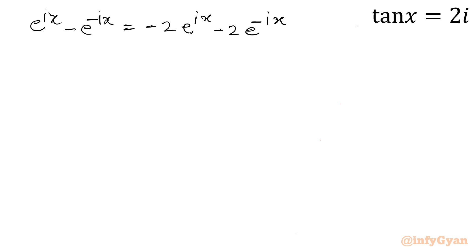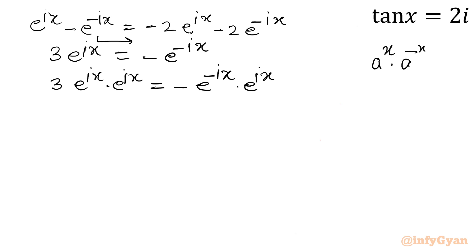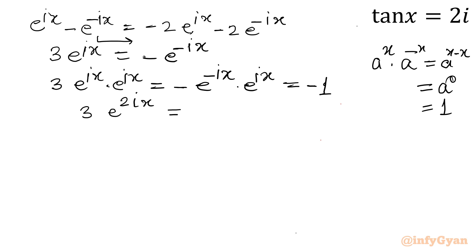Collecting the e^(ix) terms to the left gives 3e^(ix), and collecting the e^(−ix) terms gives −e^(−ix) (since −1 + (−2) = ... wait, +1 − 2 = −1). Multiplying both sides by e^(ix), and using e^(ix) · e^(ix) = e^(2ix) and e^(−ix) · e^(ix) = e^0 = 1, the right hand side becomes −1. So 3e^(2ix) = −1.